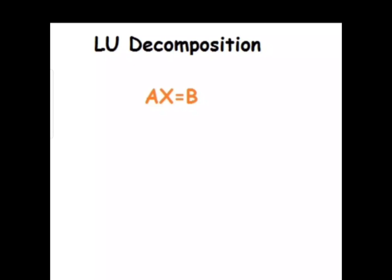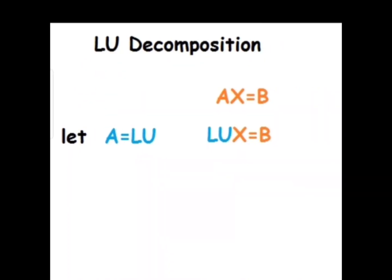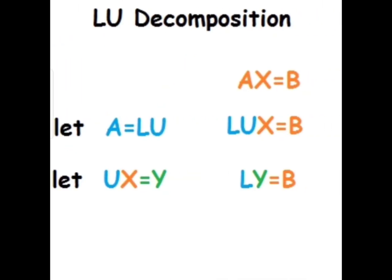Firstly we will discuss the method, and then we will discuss the formation of matrices L and U in Doolittle. If we are given a system of linear equations, we can write it in matrix form as AX equals B. Next, we suppose A equals LU, and by replacing A with LU we get LUX equals B. We then suppose UX equals Y, so replacing UX by Y gives LY equals B. Using the equation A equals LU, we find all elements of matrices L and U.